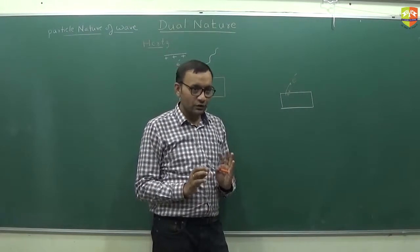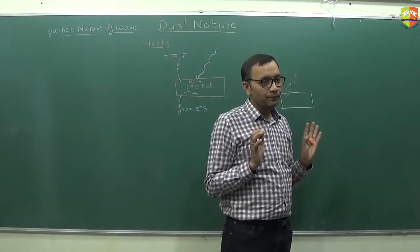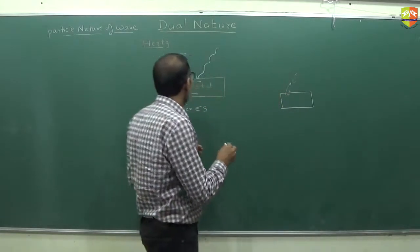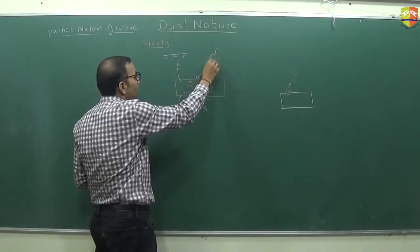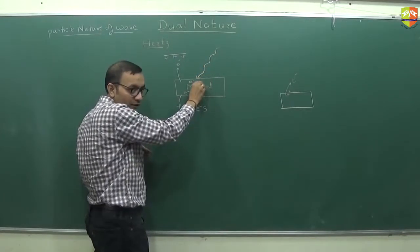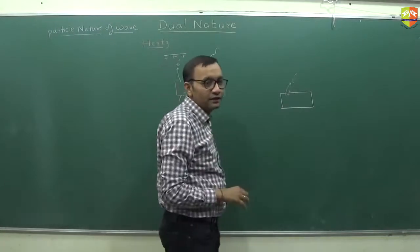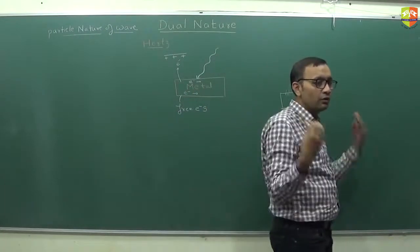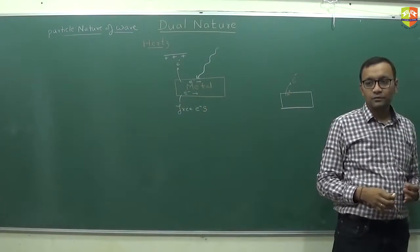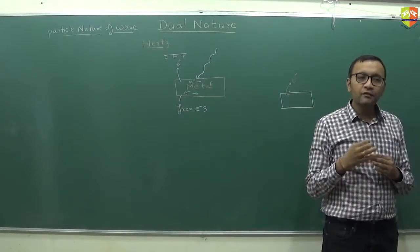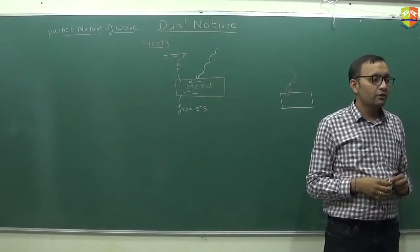But if you give sufficient energy to electron, then electron can escape from the metal. Are you getting it? So what electron wants? Energy. And when you bombard a radiation on the metal surface, this is one of the ways for electrons to gain the energy and then they are able to come out. Can you think of any other way to give energy to the electron for them to come out? Heat.